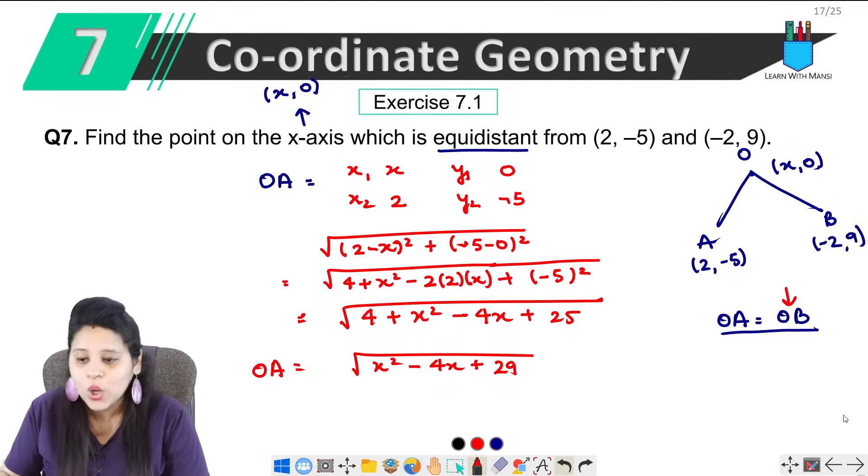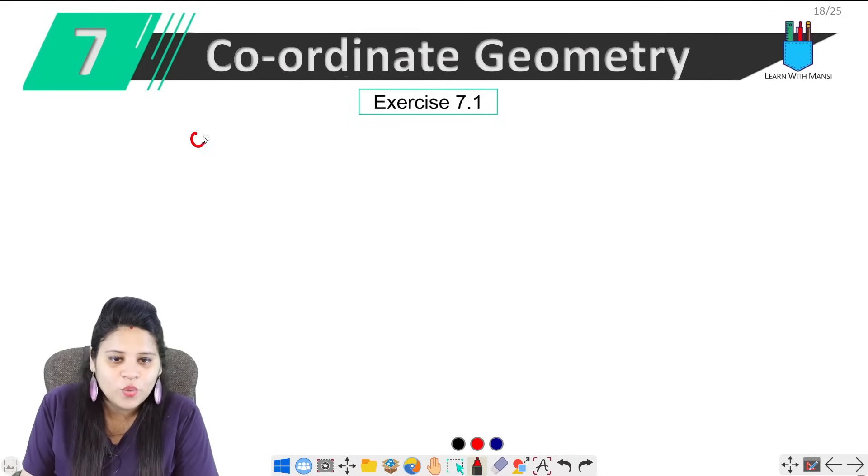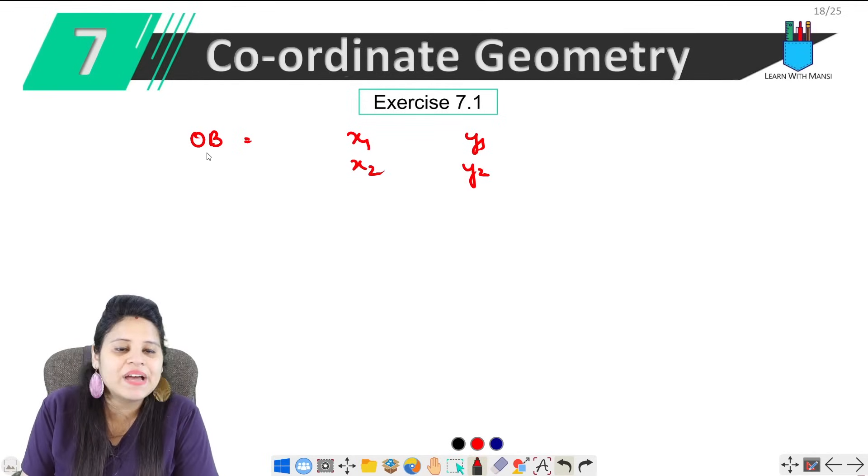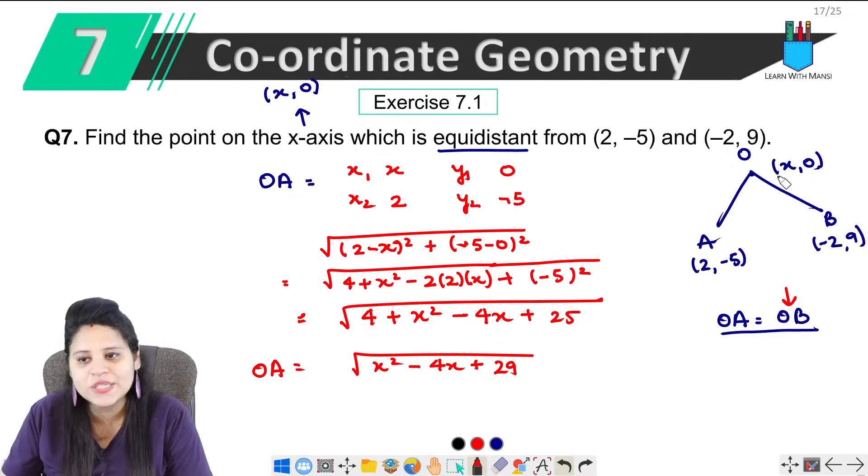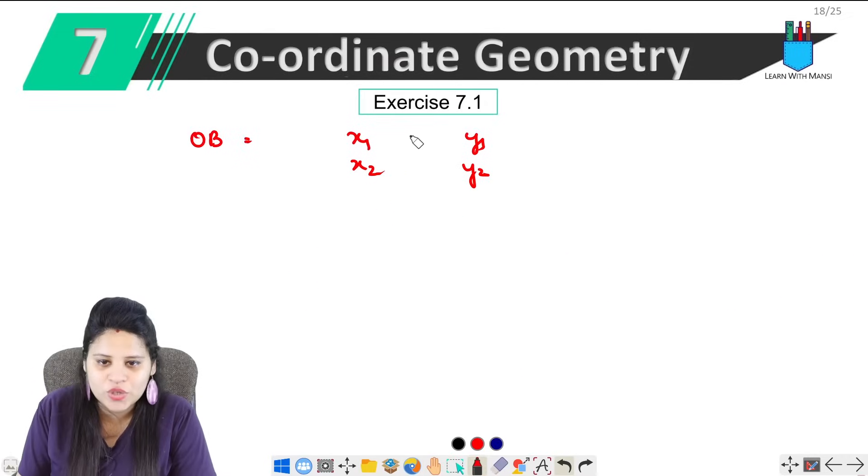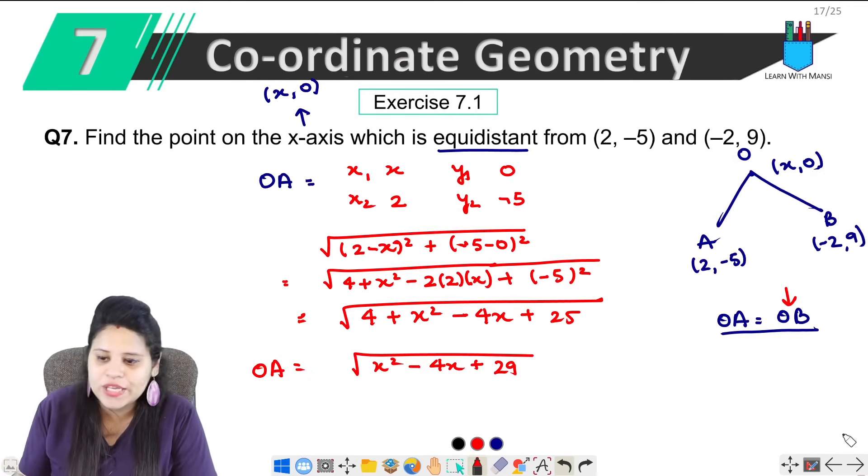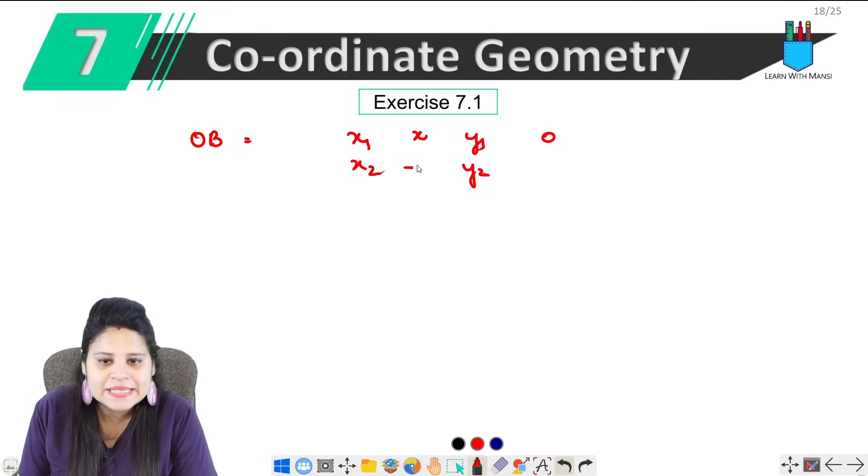Now we will find OB. So OB is the distance. Again, first x1, y1 and x2, y2. What will be x1, y1? O coordinates which is (x, 0). So this is x and 0. And what are B coordinates? B coordinates are (-2, 9). So this is -2 and this is 9.